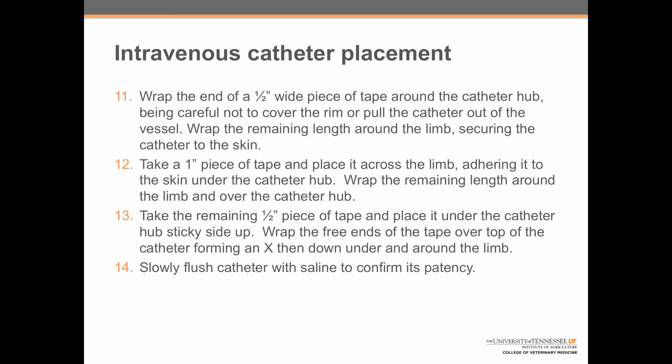Step 11: wrap the end of a half-inch wide piece of tape around the catheter hub sticky side up, being careful not to cover the rim or pull the catheter out. Wrap the remaining length around the limb securing the catheter to the skin. Step 12: take a one-inch piece of tape, place it across the limb adhering to the skin under the catheter hub, then wrap the remaining length around the limb and over the hub. Step 13: take the remaining half-inch piece of tape, place it under the catheter sticky side up, wrap the free ends over the top of the injection port forming an X, then down and around the limb. Step 14: slowly flush the catheter with saline to confirm its patency. Now it's your turn.